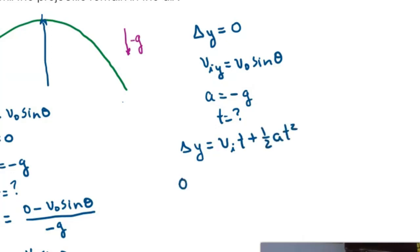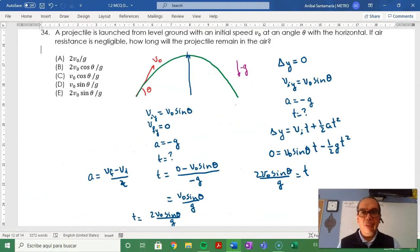This means zero equals v0 sine theta times t minus one half g t squared. You can cancel the t term when t equals zero, and a little algebra tells you that v0 sine theta multiplied by 2 and divided by g gives you the time. Therefore, your answer is option E.